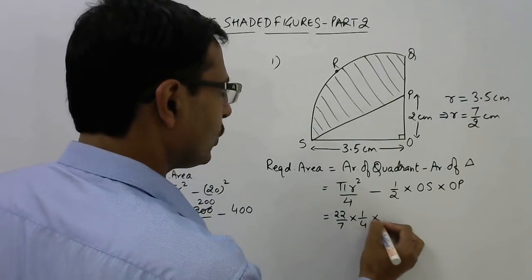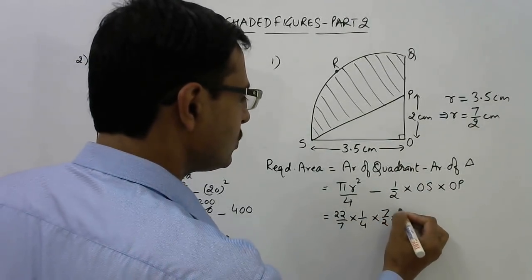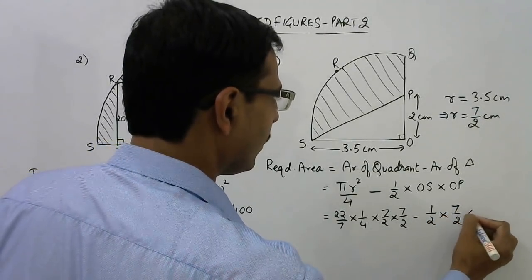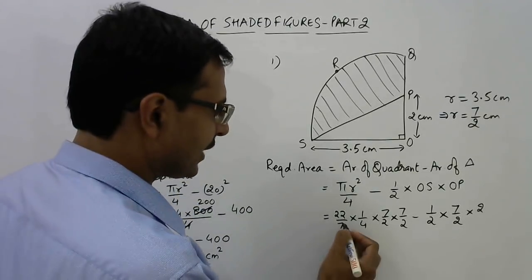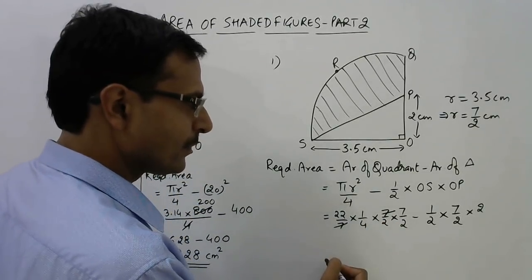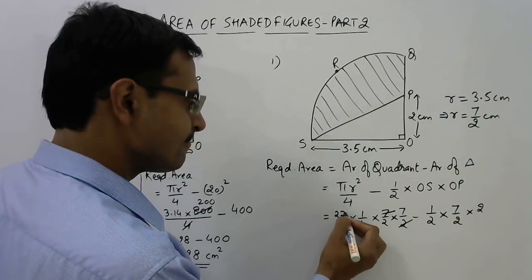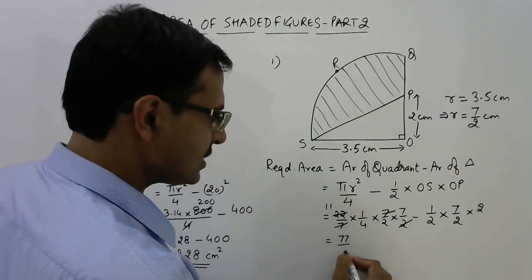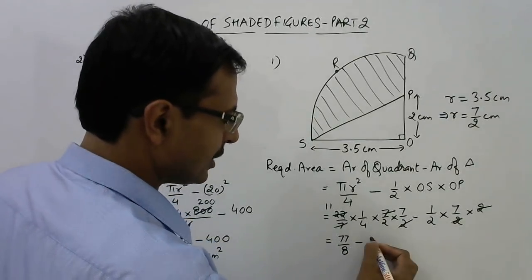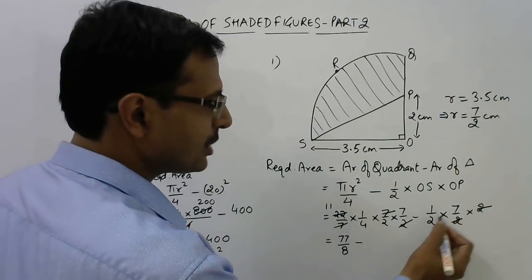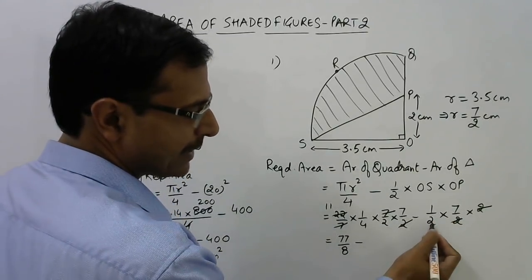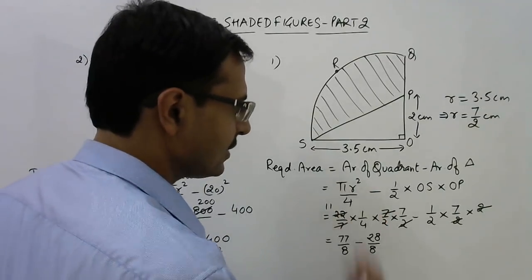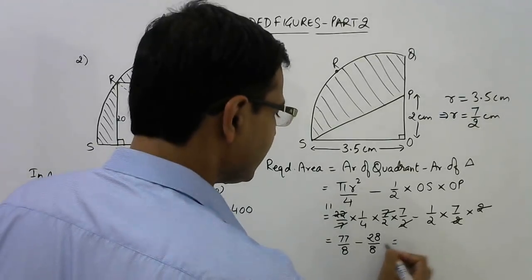Now substitute the values here. See, 22/7 into 1/4 into radius is 7/2, so 7/2 into 7/2, minus half. 7 cancels, half. OS is 7/2 again and OP is 2. Now you can cancel the common factors out. 7 cancels out. So 2 cancels 11 times, so this is 77/8 minus 7/2. I'll convert this 7/2 also in the form of 8 by multiplying by 4, so 7 times 4 is 28/8. This is 7/2.